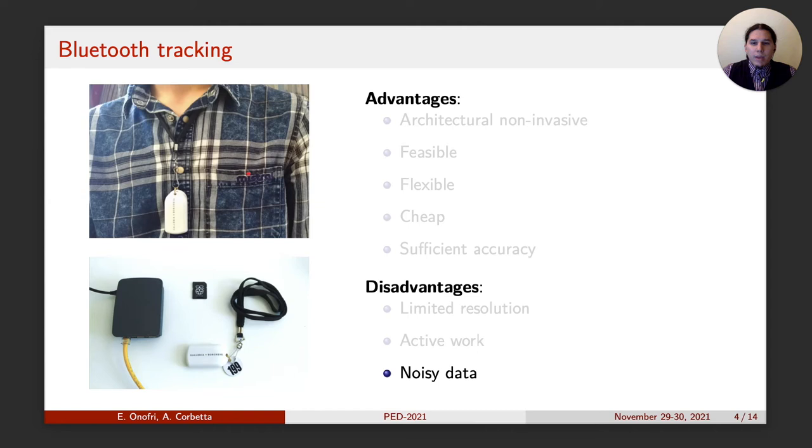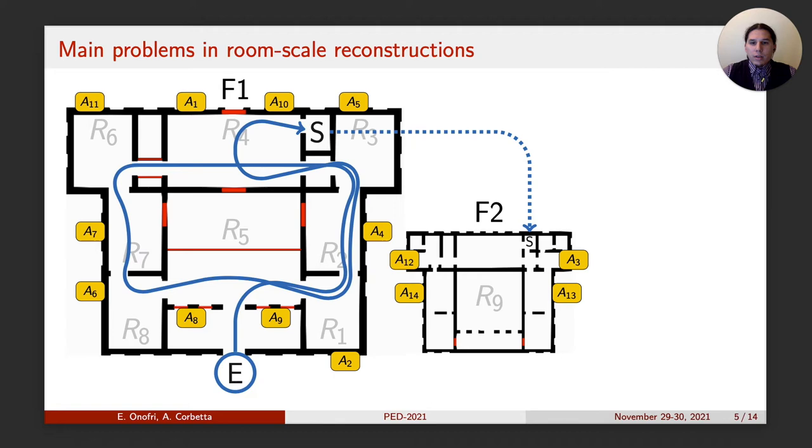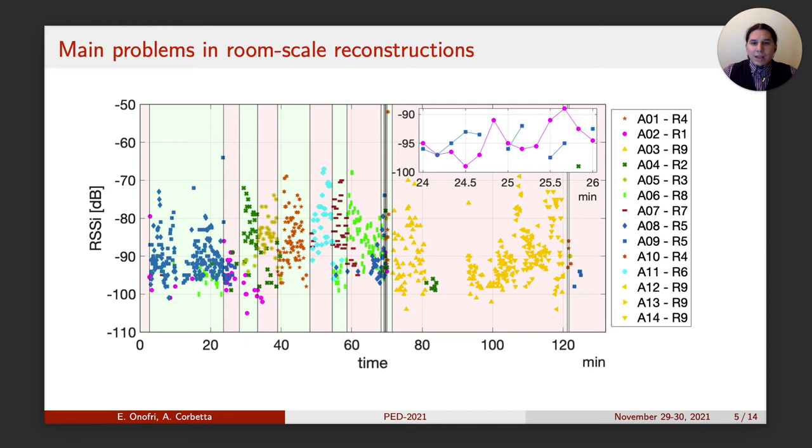So, the main problem is being able to reconstruct a trajectory like the one reported in the figure, starting from the antenna's signal gathered. Here we have a raw dataset corresponding to the blue trajectory. The marker represents the signal in time, where different colors correspond to different rooms in the museum, while different markers represent different antennas. As we can see, there are four main problems.